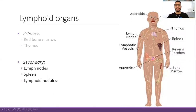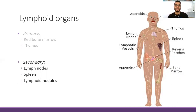We already know that the primary lymphoid organs are responsible for production and maturation of T cells, and the secondary organs' main function is to activate the T cells — the activation due to any problem that the organism may face, whether this is an infection or an accident in which you have a fracture or a skin injury. Those types of injuries and infections usually require the activation of T lymphocytes, so the activation is mainly done by the secondary lymphoid organs.